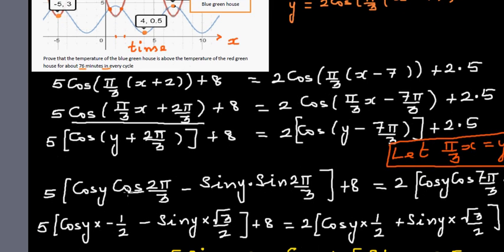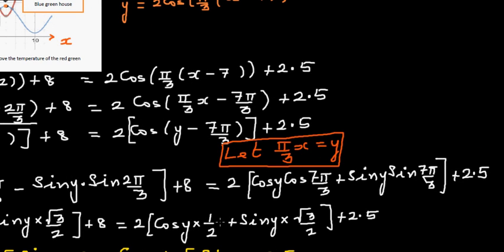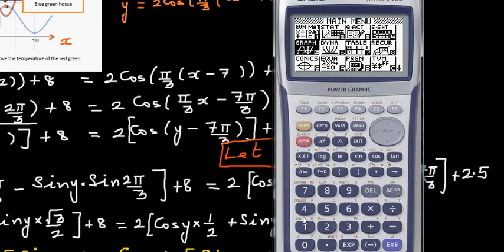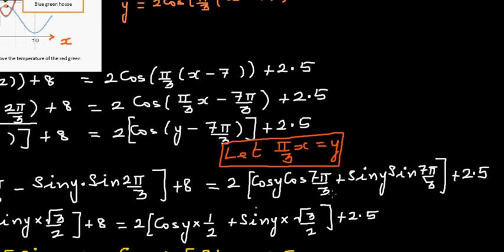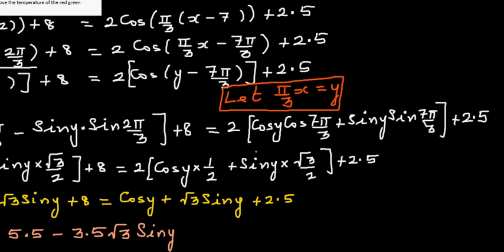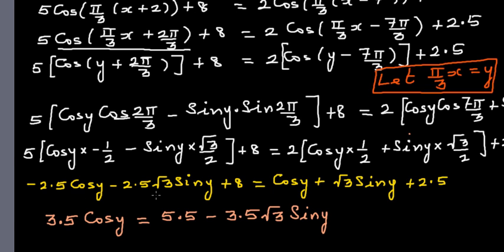So this is just using the compound angle formula on both sides. I've expanded this out. cos(2π/3) = −1/2 and sin(2π/3) = √3/2. Similarly, cos(7π/3) = 1/2 and sin(7π/3) = √3/2 — you can verify this with a calculator. I've done the same to the right-hand side.